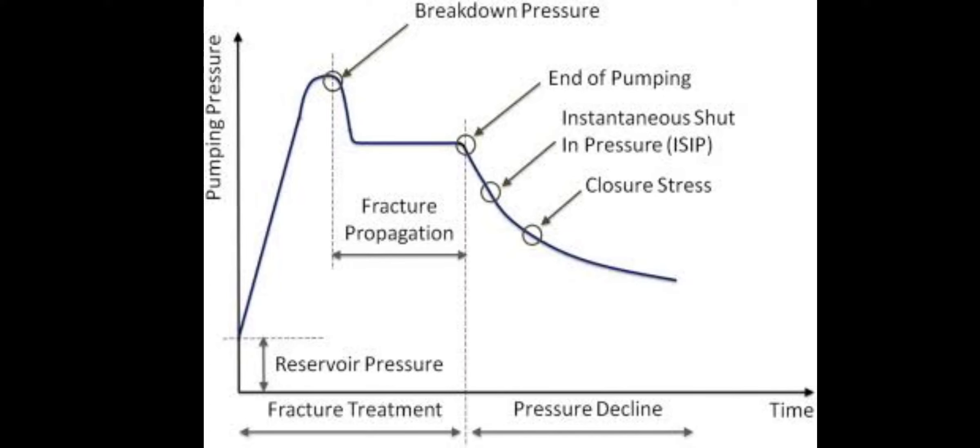After stopping the pump, leakage from the fracture occurs and the pressure subsequently drops to the instantaneous shut-in pressure (ISIP), where pressure reduces instantaneously to that point. Then it gradually reduces further to the fracture closure stress, which is called the fracture closure point. This is the basic analysis of the mini-frag test graph.